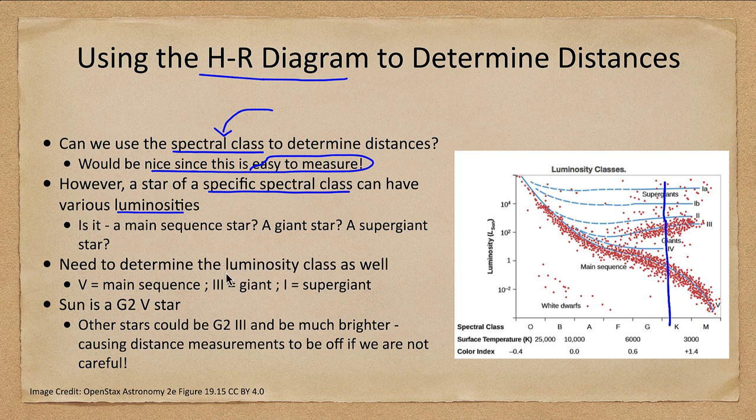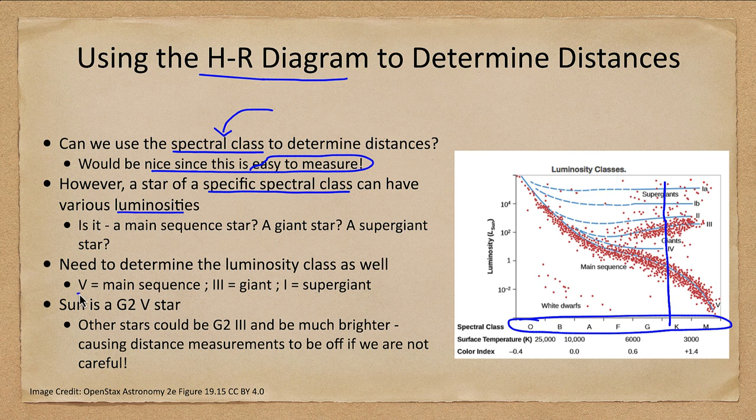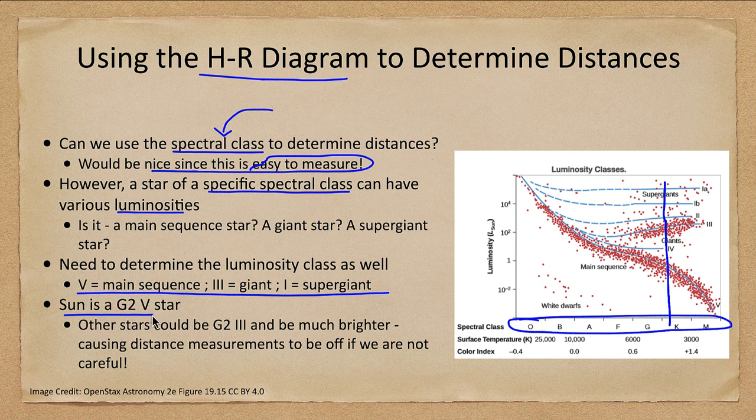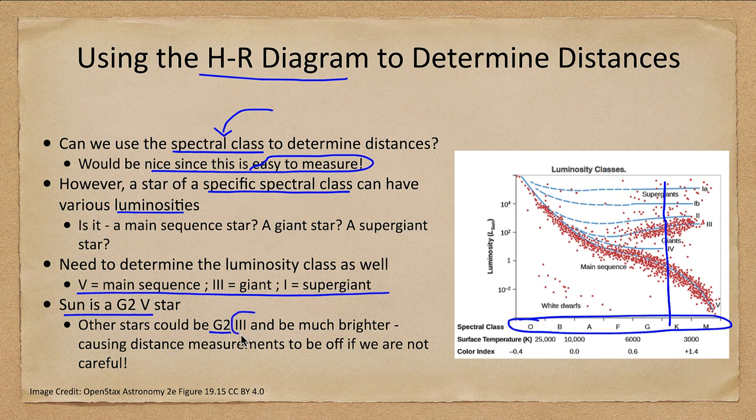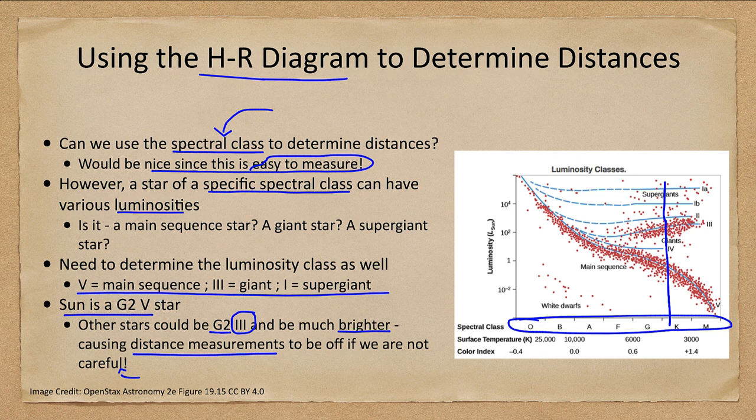So we need to determine the two dimensional spectral class, not only the OBAFGKM class, but also the Roman numeral 1 through 5 class. For example, our sun is a G2 V star. Another G2 star could be a giant class 3, which would be much brighter. That could cause our distance measurements to be off if we are not careful.